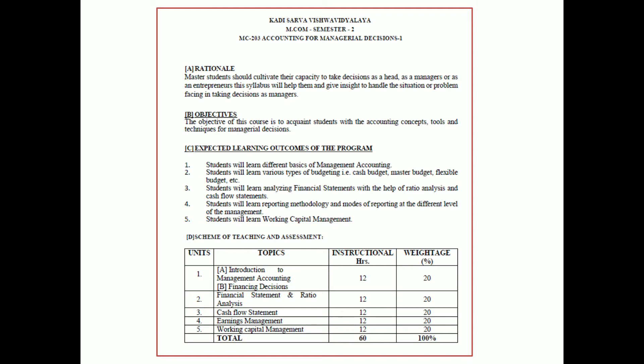Let's see which are the units we are covering in this subject. Unit 1: Introduction to Management Accounting and Financing Decision, weightage 20%. Unit 2: Financial Statement and Ratio Analysis, weightage 20%. Unit 3: Cash Flow Statement, weightage 20%. Unit 4: Earning Management, weightage 20%. And Unit 5: Working Capital Management, weightage 20%. So in this subject, we learn a total of 5 units.